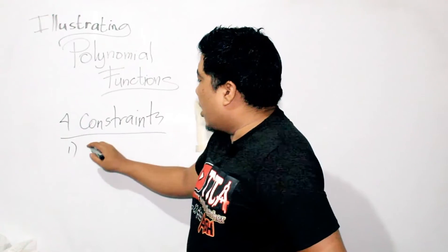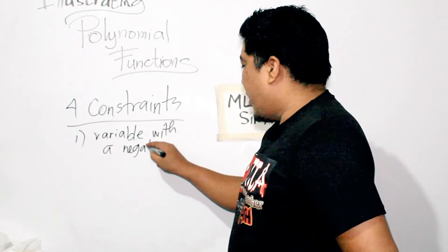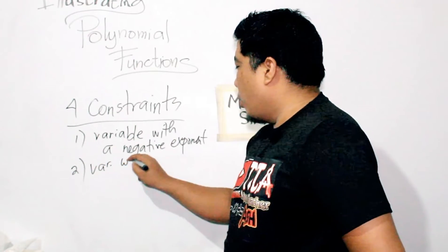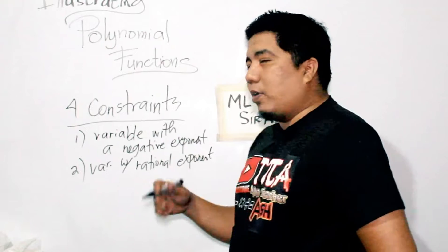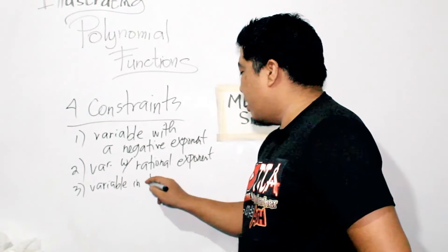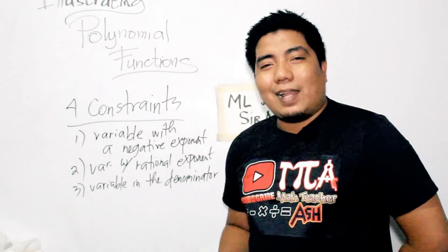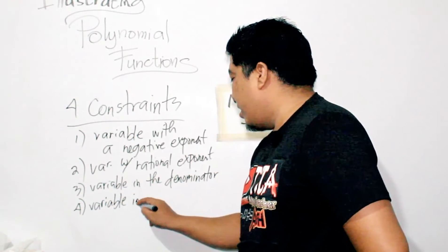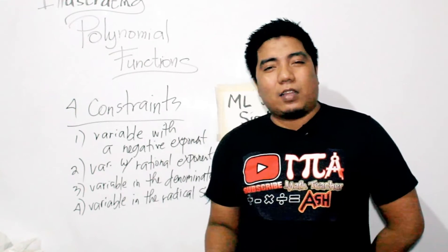The first constraint is a variable with a negative exponent. Number two, a variable with a rational exponent, meaning the exponent of the variable is a fraction. Number three, a variable in the denominator side — if you see a variable in the denominator, that is not a polynomial. And finally, number four, a variable in the radical side. If you can see a variable inside the radical symbol, then that is not a polynomial.